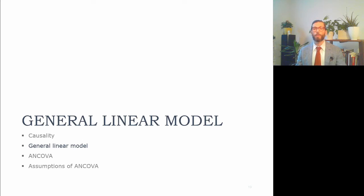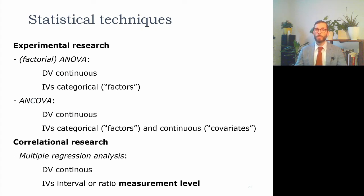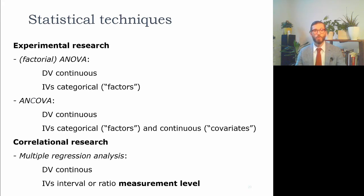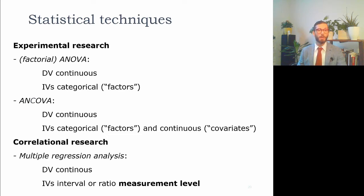This brings us to the general linear model — a flexible modeling technique in which you can represent the effect of several predictors as a linear effect on one continuous outcome. You may already be familiar with factorial ANOVA, used with a continuous outcome and one or more categorical predictors; ANCOVA, which is similar but also includes continuous covariates; and multiple regression, with a continuous outcome and several predictors. What you may not know is that all of these techniques, including the t-test, are examples of the general linear model.